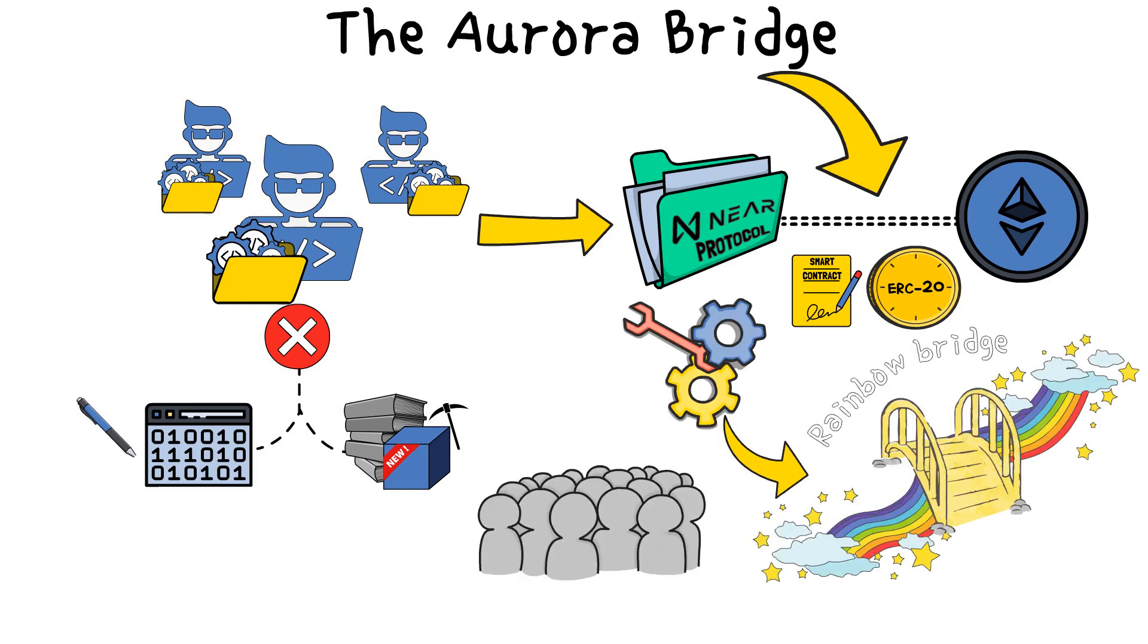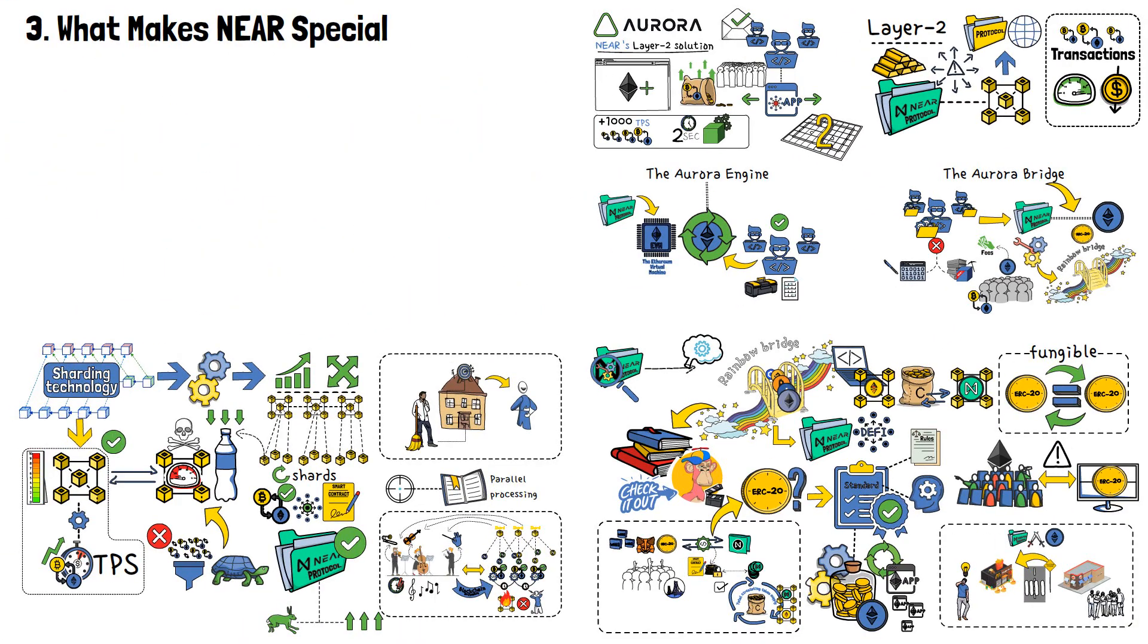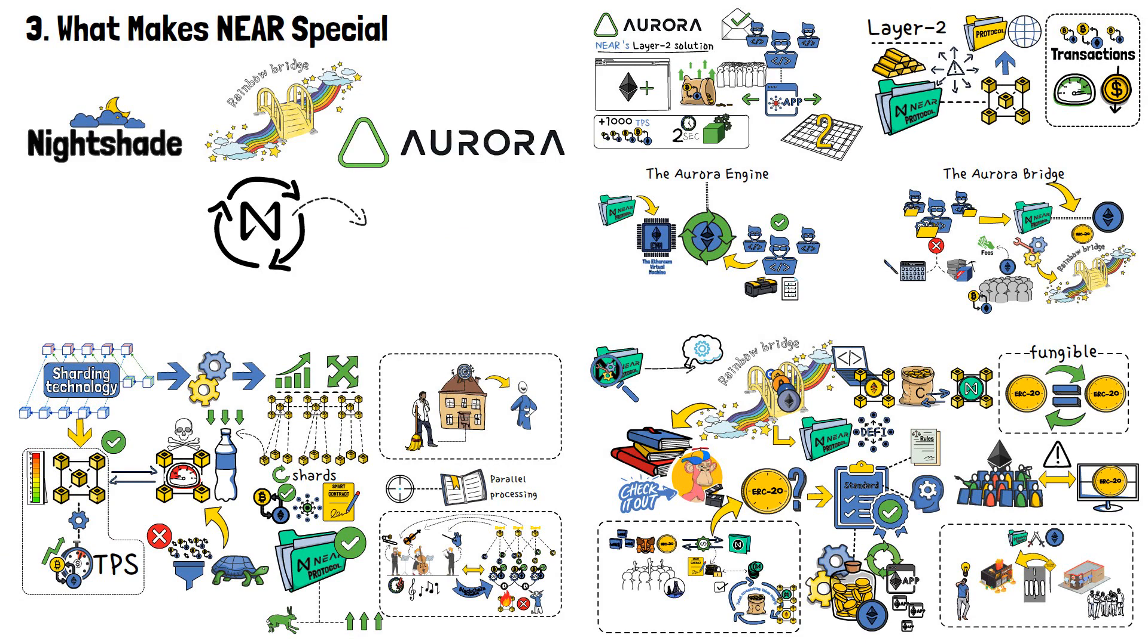Notably, users can also transact using ETH for fees within the Aurora ecosystem. So, to summarize, NEAR protocol's ecosystem, represented by nightshade sharding, optimized by the Rainbow Bridge and amplified by Aurora, represents the ambitious quest for blockchain excellence and becoming better than Ethereum.